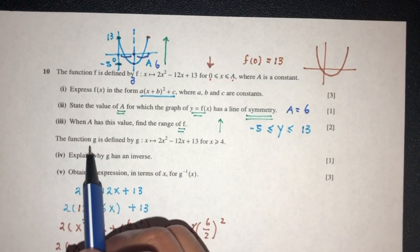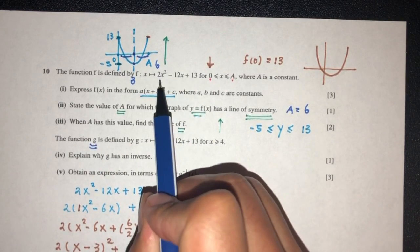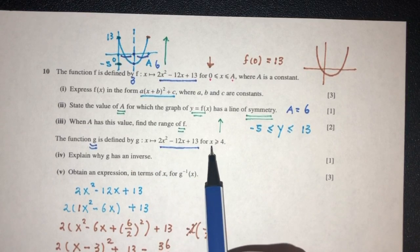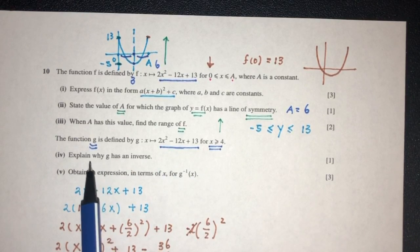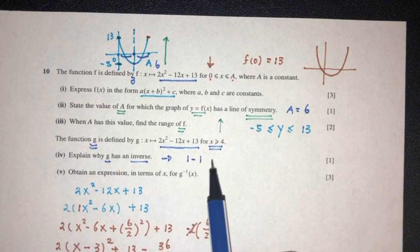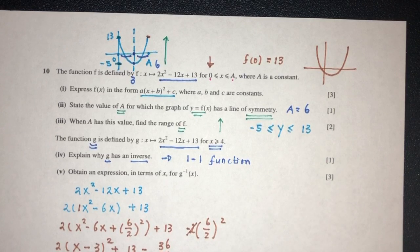Now here we have function g is defined by this. Again, it is the same equation. 4x is more than 4. Explain why g has an inverse. It is true, because it is a one-to-one function. This is always going to be the answer, why they have an inverse or why they don't have an inverse. If they have an inverse, it is a one-to-one function. If they don't, it means they are not a one-to-one function.